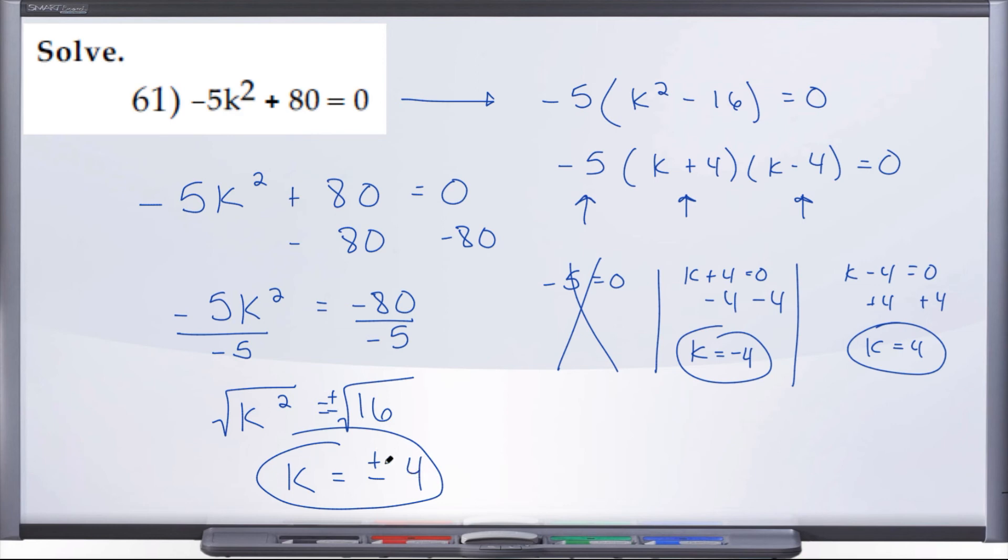You can go ahead and check yourself here to make sure that you end up with the right answer. 4 squared is 16, and then 16 times negative 5 is negative 80.